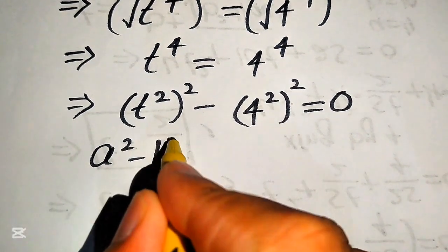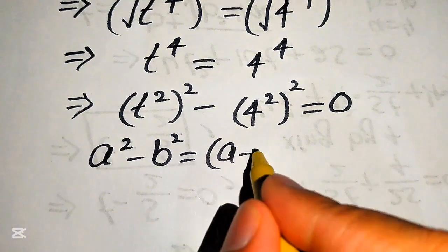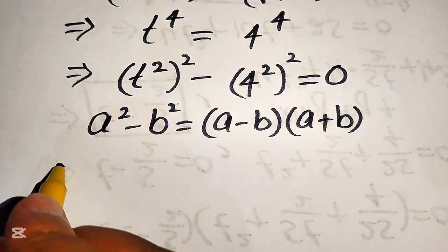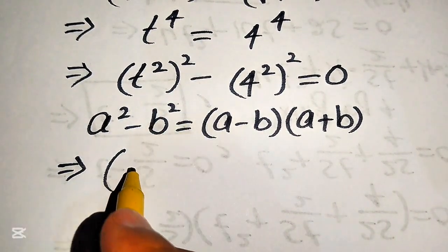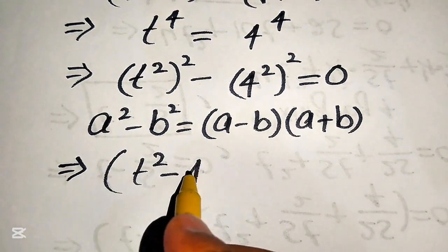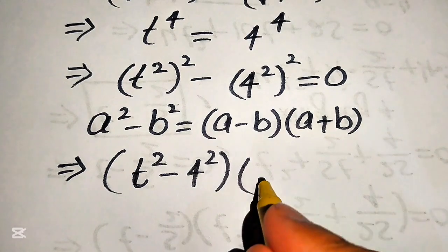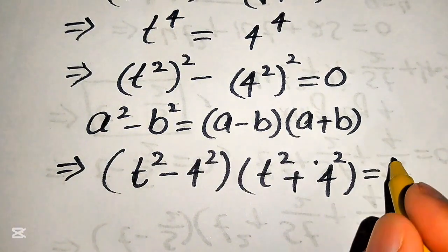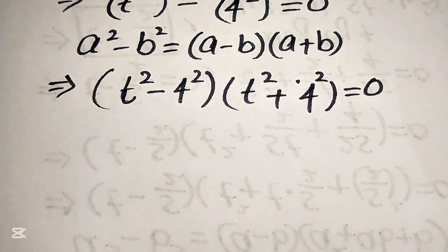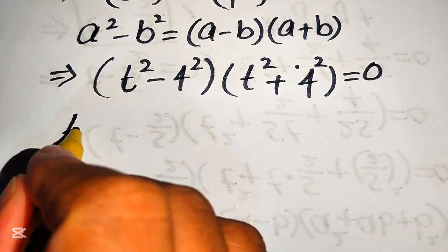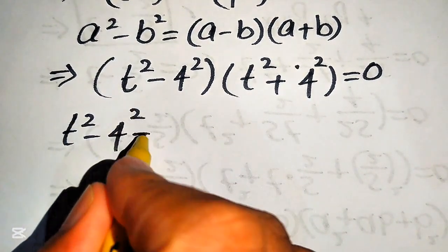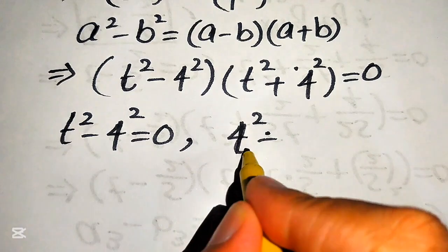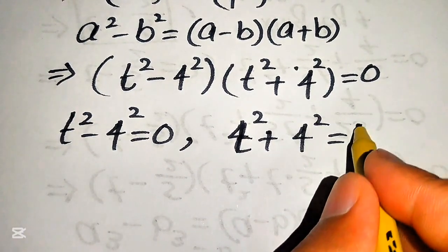We apply the algebraic formula: a squared minus b squared equals (a minus b)(a plus b). Here a equals t squared and b equals 4 squared. So the equation becomes (t squared minus 4 squared)(t squared plus 4 squared) equals zero. This gives us two cases: Case 1 is t squared minus 4 squared equals zero, and Case 2 is t squared plus 4 squared equals zero.